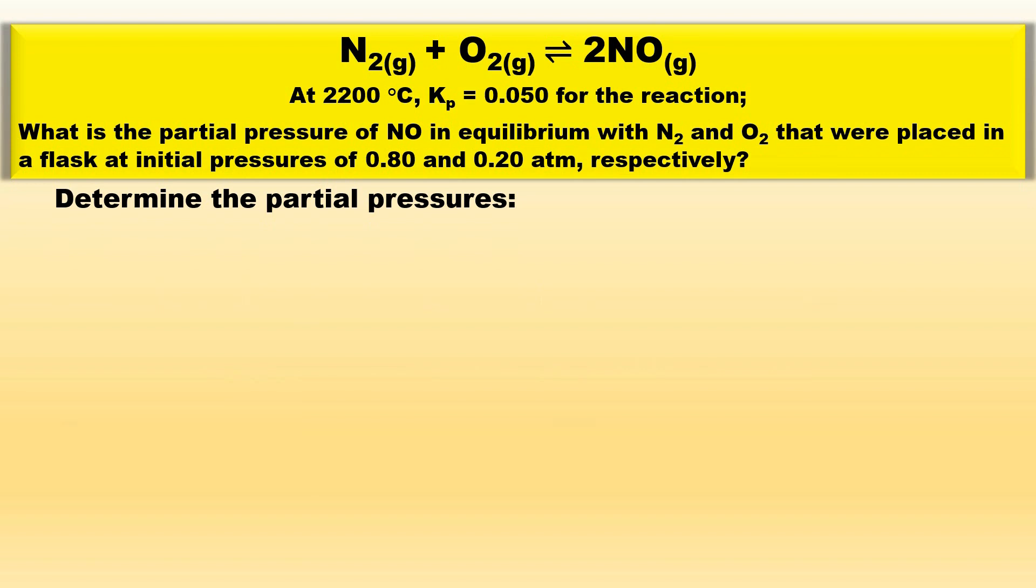Now to determine the actual partial pressures at equilibrium. The PN2 is equal to 0.800 minus 0.039, which is equal to 0.761 atm. The PO2 is equal to 0.200 minus 0.039, which is equal to 0.161 atm.